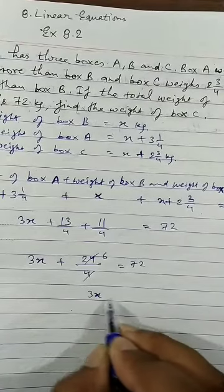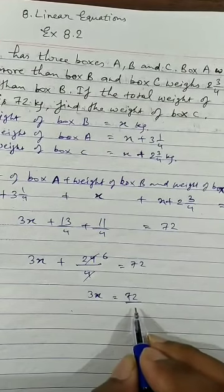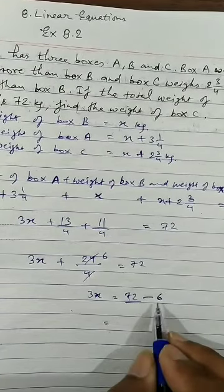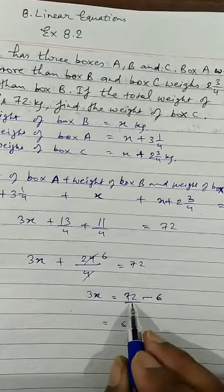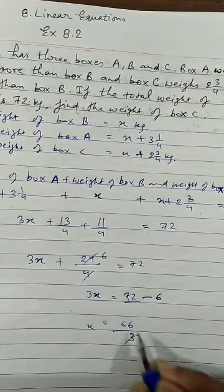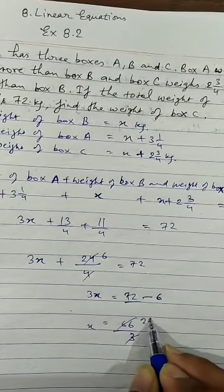So 3X equals to 72 minus 6. So 72 minus 6 is 66 and this 3 comes down. It is 22.